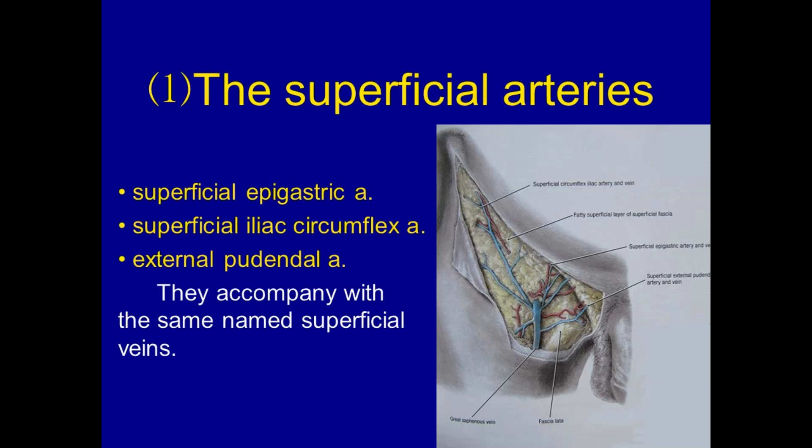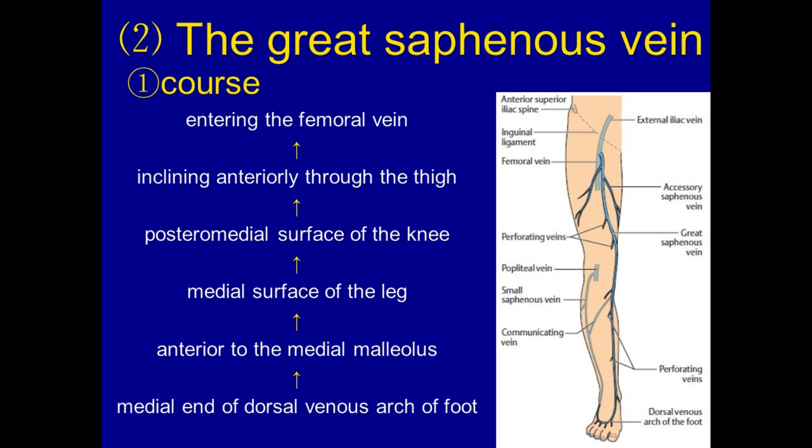These arteries accompany the same-named superficial veins. The great saphenous vein courses by entering the femoral vein, inclining anteriorly through the thigh, along the posteromedial surface of the knee, the medial surface of the leg, anterior to the medial malleolus, and from the medial end of the dorsal venous arch of the foot.